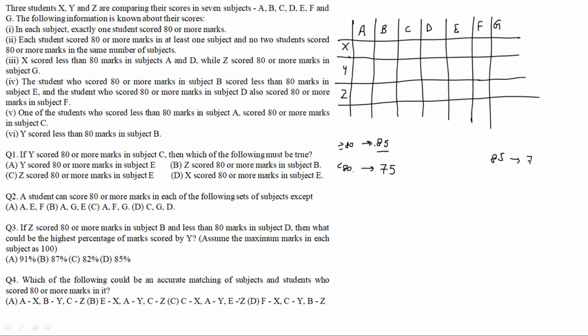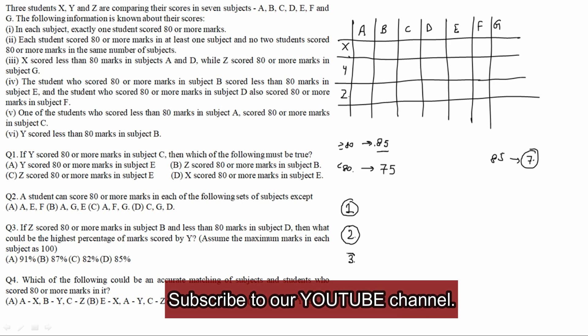In each subject there is only one student scoring 85, so 85 will appear exactly 7 times total across all blocks. Each student must have at least one 85. No two students can have 85 in the same number of subjects. So if one person has 85 once, another must have it at least twice, and the third at least three times.